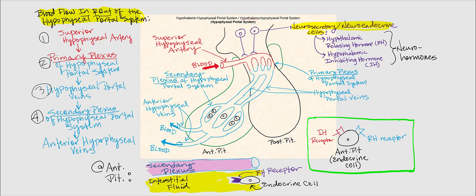Blood then leaves the anterior pituitary through the anterior hypophysial veins. These veins converge, eventually into the internal jugular vein, ultimately into the superior vena cava, and back to the right atrium of the heart. These blood vessels are part of the systemic circuit — systemic blood vessels, not pulmonary blood vessels.